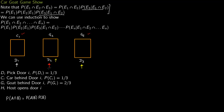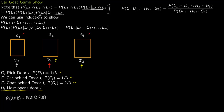Let us now solve this problem mathematically. Let Di be the event that the contestant picks door i, so he picks door i with probability one third. There is a car behind door i with probability one third, and a goat behind a particular door with probability two thirds. The conditional probability we want is: probability that car is behind door 1, given that contestant picked door 1, host opens door 3, and there is a goat behind door 3. Here A is C1 and B is D1 intersection H3 intersection G3.